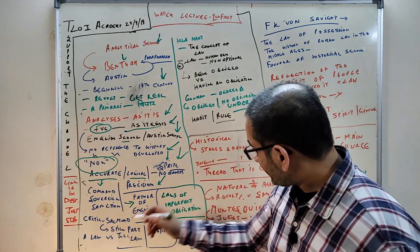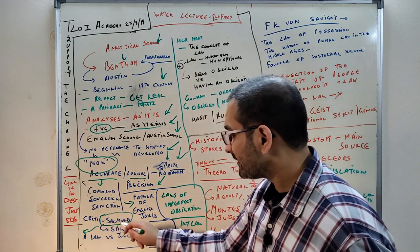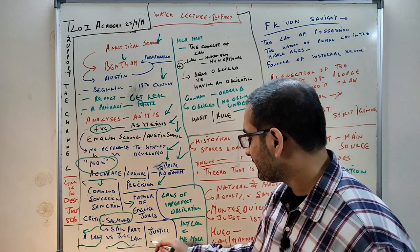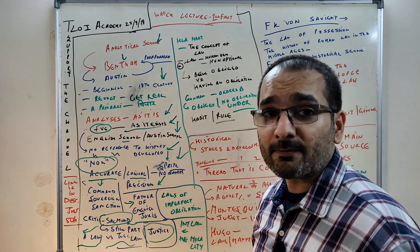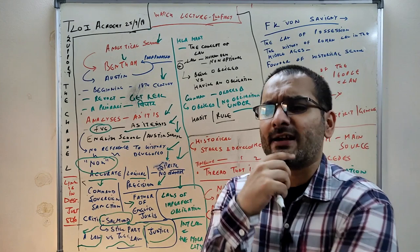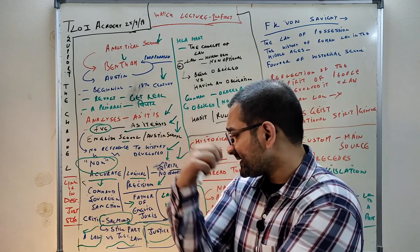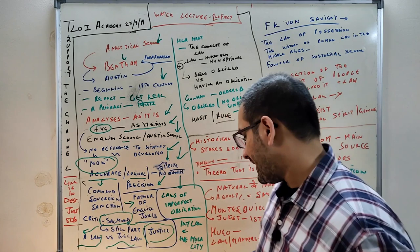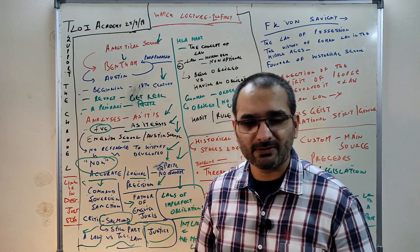Now let's look at Salmond's criticism. Salmond was part of the analytical school but criticized Austin, saying that what Austin defined is 'a law' not 'the law'. Salmond was very focused on justice, which Austin didn't focus on. Then there are laws of imperfect obligation - for example, in the Contract Act, Section 2 defines contract. Where is the command, sovereign, or sanction in that?